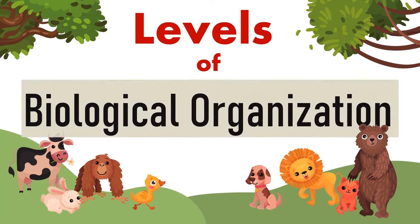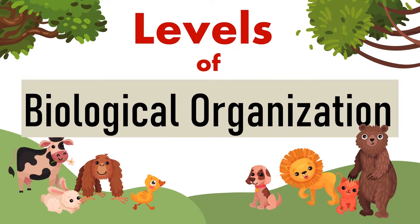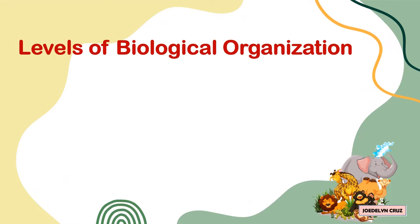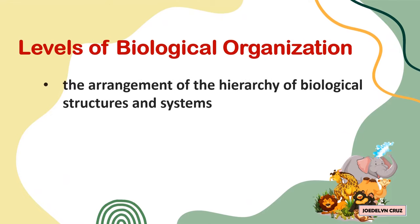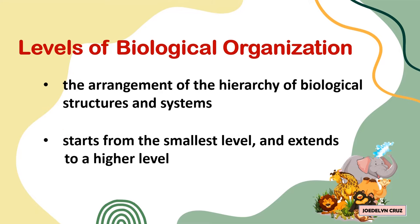Levels of Biological Organization is the arrangement of the hierarchy of biological structures and systems. The biological hierarchy starts from the smallest level and extends to a higher level.